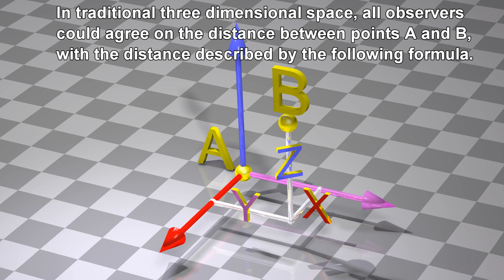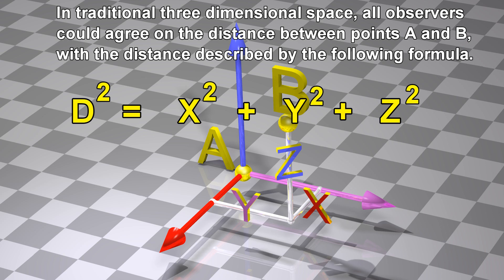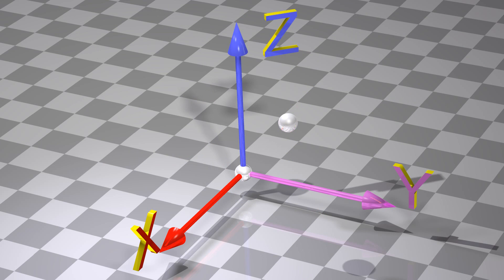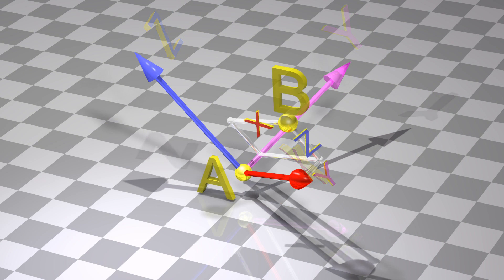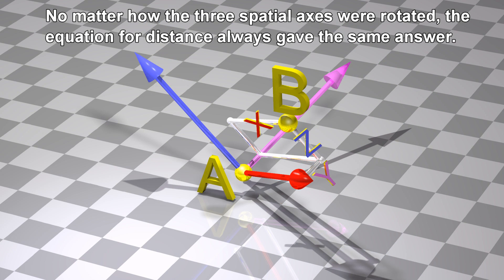In traditional three-dimensional space, all observers could agree on the distance between points A and B, with the distance described by the following formula. No matter how the three spatial axes were rotated, the equation for distance always gave the same answer.